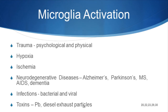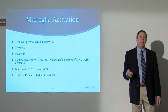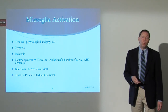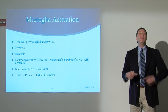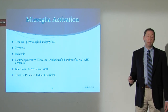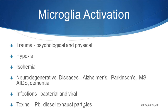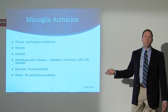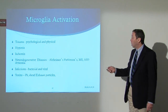What turns microglia on? Almost everything. Psychological and physical trauma, stress, and post-traumatic stress syndrome will activate microglia. Hypoxia and ischemia activate them - we see them active in strokes. They're activated in neurodegenerative diseases including Parkinson's disease, Alzheimer's disease, multiple sclerosis, and AIDS-related dementia. Infections can turn them on, and importantly, the infections don't have to be in the central nervous system - systemic infections in the peripheral system can activate CNS microglia through crosstalk across the blood-brain barrier. Toxins such as lead and diesel fumes are proven - not hypothetical - causes of activation and inflammatory responses in microglia.